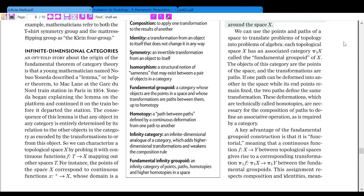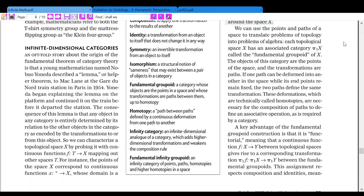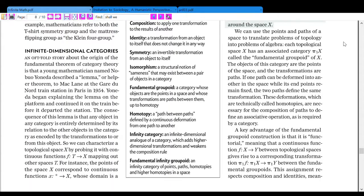Infinite dimensional categories. An oft-taught story about the origin of the fundamental theorem of category theory is that a young mathematician named Nobuo Yoneda described a lemma or helper theorem to Mac Lane at the Gare du Nord train station in Paris in 1954. Yoneda began explaining the lemma on the platform and continued it on the train before it departed the station. The consequence of this lemma is that any object in any category is entirely determined by its relation to the other objects in the category as encoded by the transformations to or from this object. So, we can characterize a topological space X by probing it with continuous functions f maps T to X mapping from other spaces T. For instance,